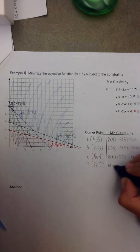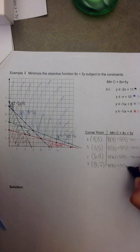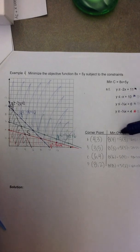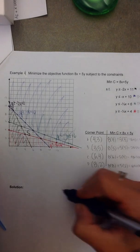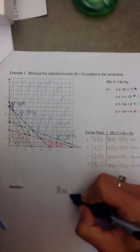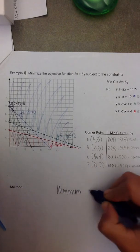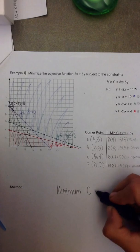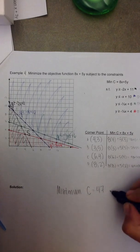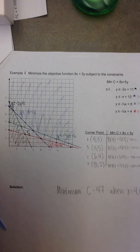And finally, 8 times 8 plus 5 times 2 gives me 64 plus 10, or 74. Because the objective function is to minimize, I want to find the smallest of these values. The smallest one is 47, so the minimum value of C is 47, and that is achieved when x equals 4 and y equals 3.